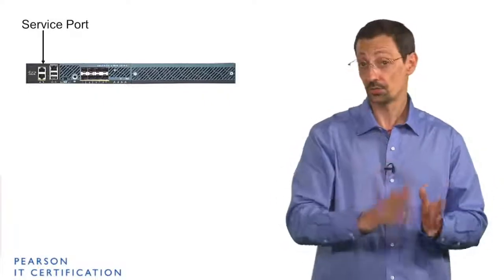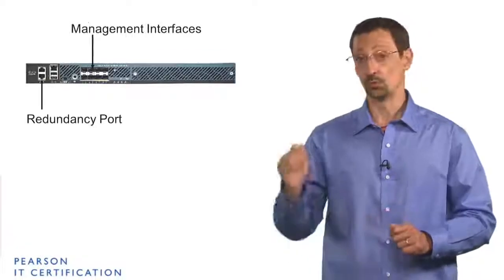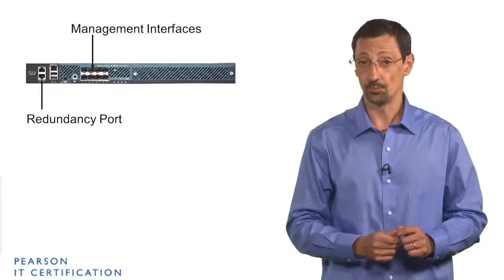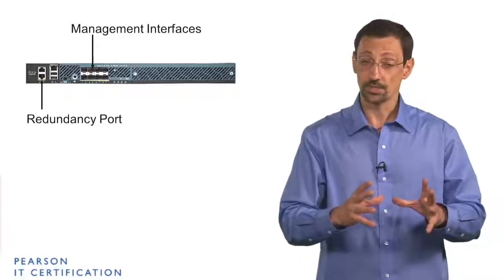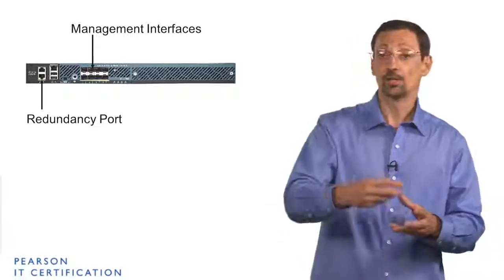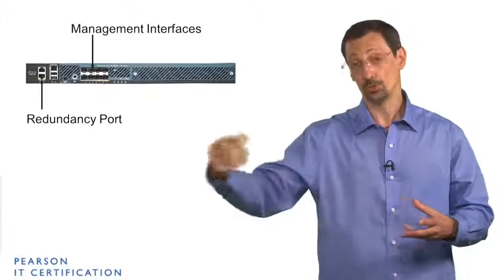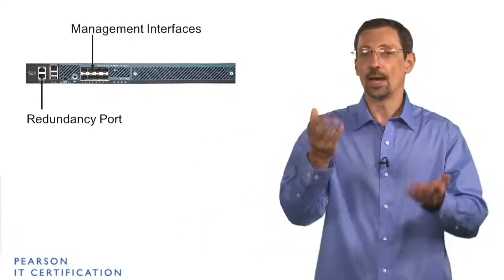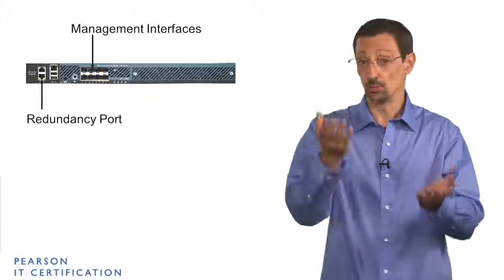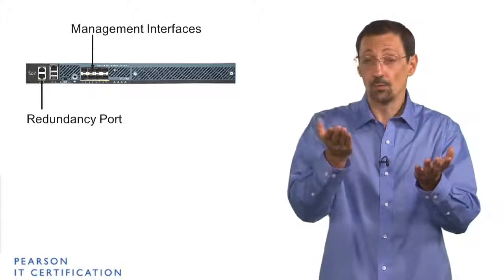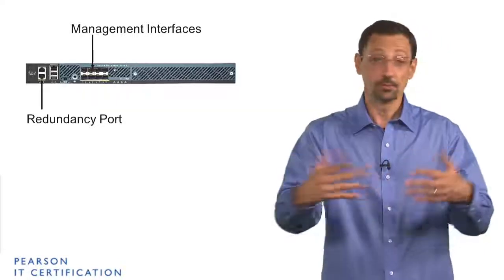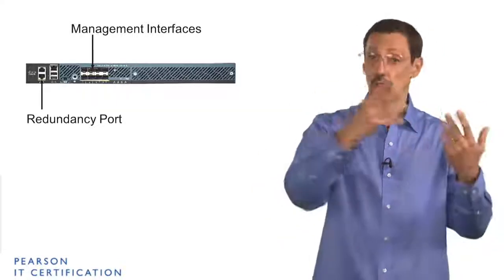So that's the service port. Then the last two interfaces that you want to be aware of are, first of all, on the far side redundancy port. What this one does is that you would connect to it and connect to the network and to some other controller and that allows you to set up some single sign-on and high availability system between these two controllers so that if ever one of them fails, the other one immediately will take over and take ownership of your access points and your clients.